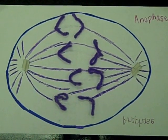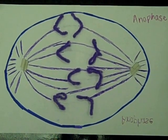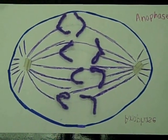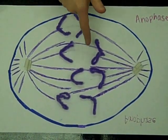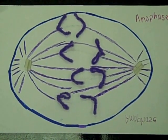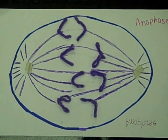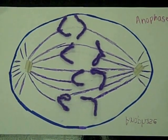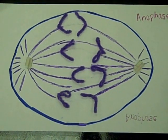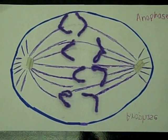Anaphase, my third phase, begins suddenly, when chromosomes are split in half to form sister chromatids. Microtubules, which sprouted from my centrosomes in prophase, pull the sister chromatids to opposite sides of the cell by shortening themselves.